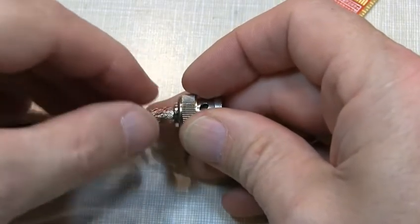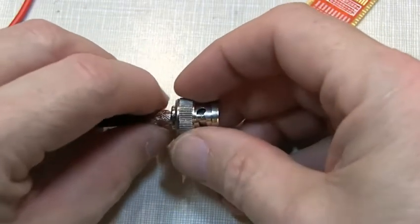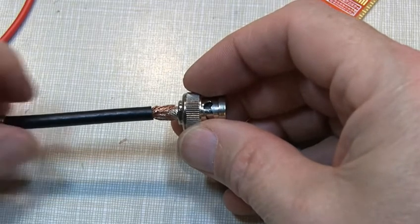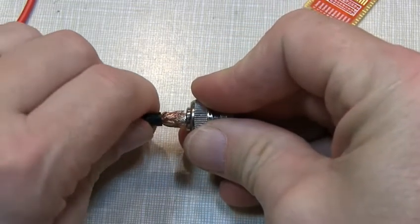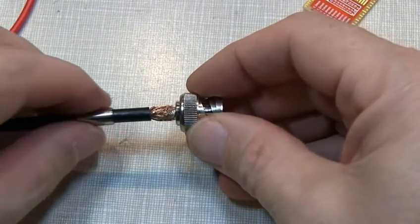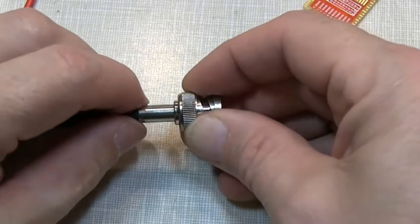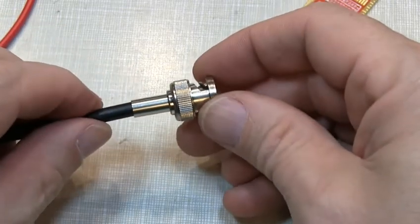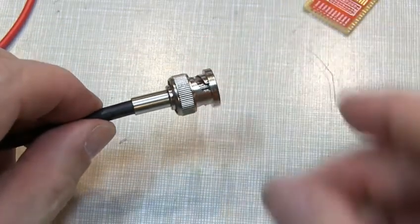And then once we have got that in place, the connector is all pushed in as tight as it's going to go. We're bottoming out that center insulator against the inside of the connector. We can bring our crimping sleeve up and cover this up, and now we're ready to crimp that.